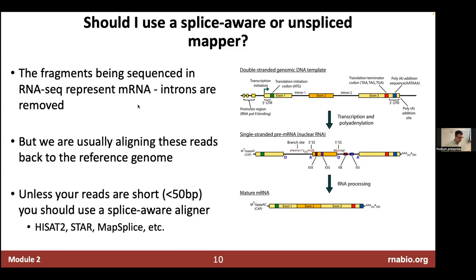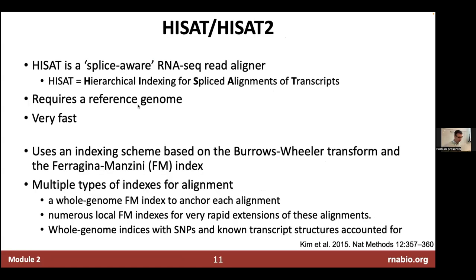Should you use a splice-aware or unspliced aligner? The fragments we're sequencing represent mRNA with introns removed, but we're aligning reads back to the reference genome. Unless you have short reads under 50 base pairs, you're probably going to use a splice-aware aligner — and specifically in this course we're going to introduce HISAT.